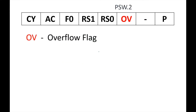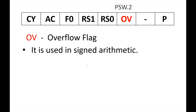The overflow flag corresponds to PSW.2. It is particularly used in signed arithmetic operations. Numbers can be expressed as unsigned or signed; in signed numbers there are both negative and positive values. When performing signed arithmetic operations like signed addition or signed subtraction, if the result exceeds the range of signed arithmetic — for an 8-bit signed number, the range is minus 128 to plus 127 — then the overflow flag is set.